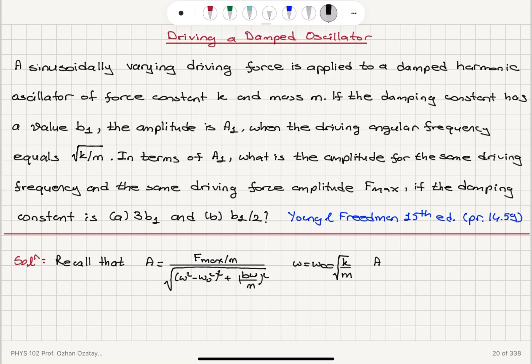So we would find the corresponding amplitude then in the resonance condition f_max divided by m. This term would become zero. So we would have b₁ squared divided by m squared, and for omega squared we have k over m, and then we have the square root.